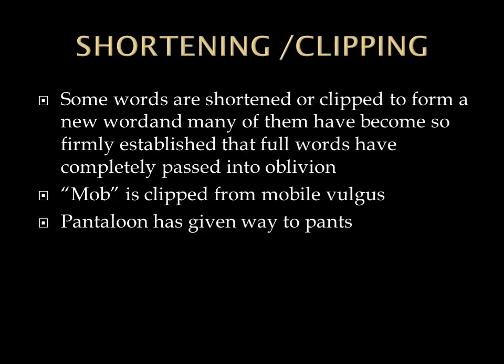Shortening or clipping is another form of word formation. Several long words of foreign origin are clipped to form new words, and many of them have become so firmly established that the full words have been completely passed into oblivion. For example, mobile vulgus has been clipped to form mob, and mob is now more popular. Pantaloon has given way to pants, zoo for zoological gardens, extra for extraordinary, pub for public house, photo for photograph, and lab for laboratory. The bigger word is clipped and the new word becomes firmly established in the English language.